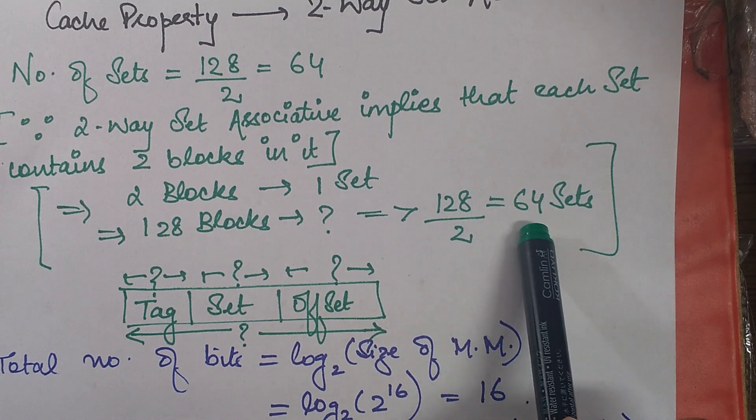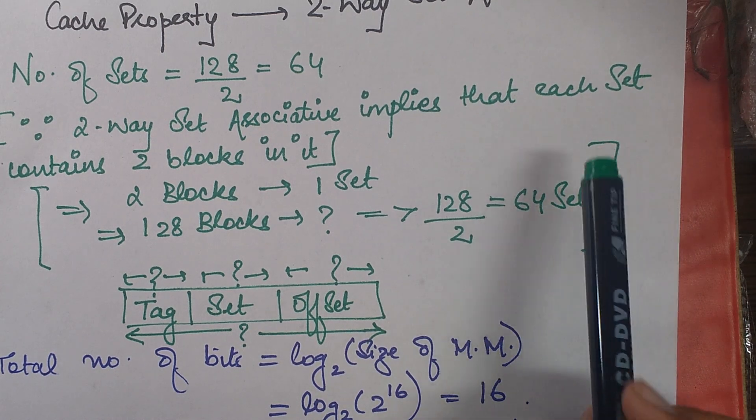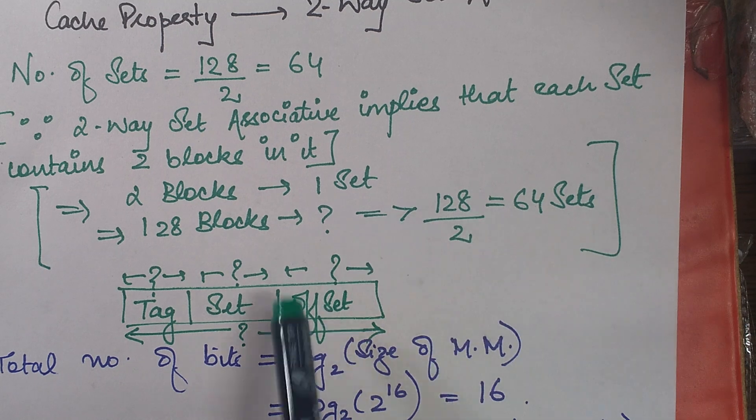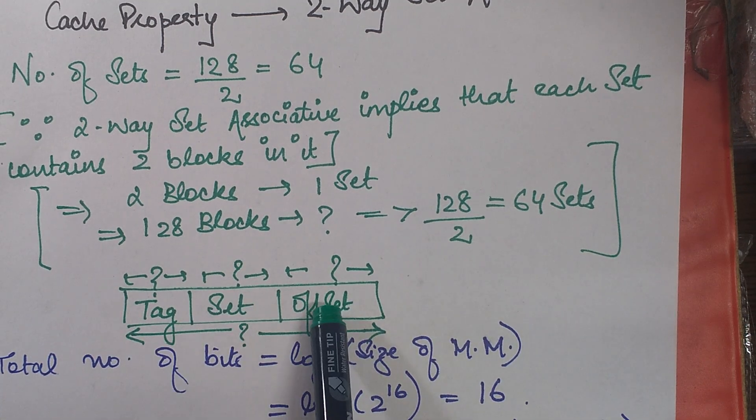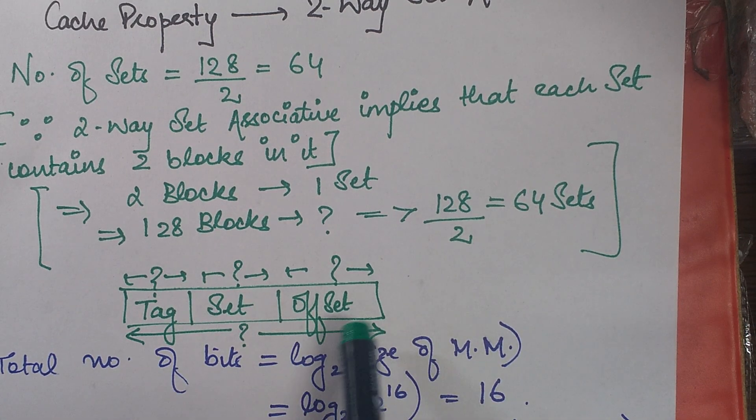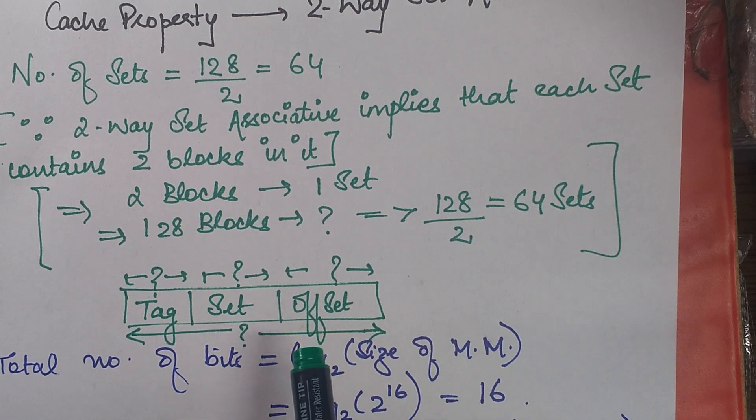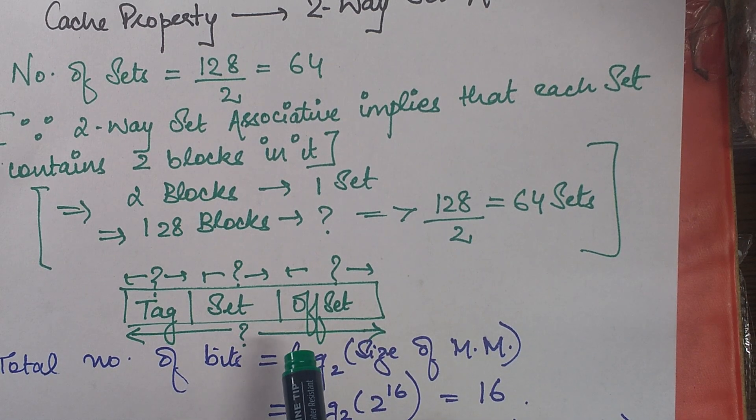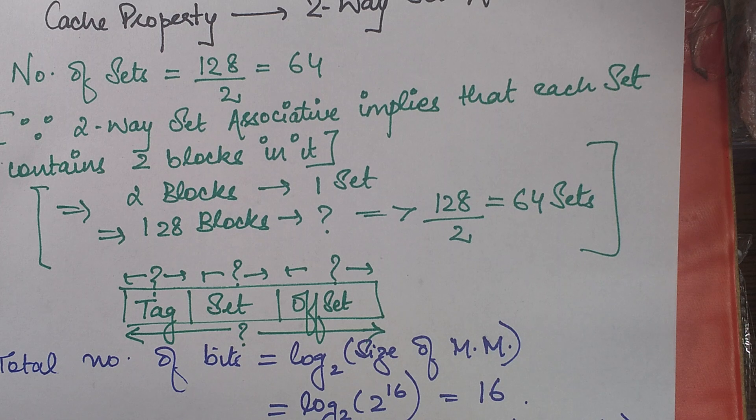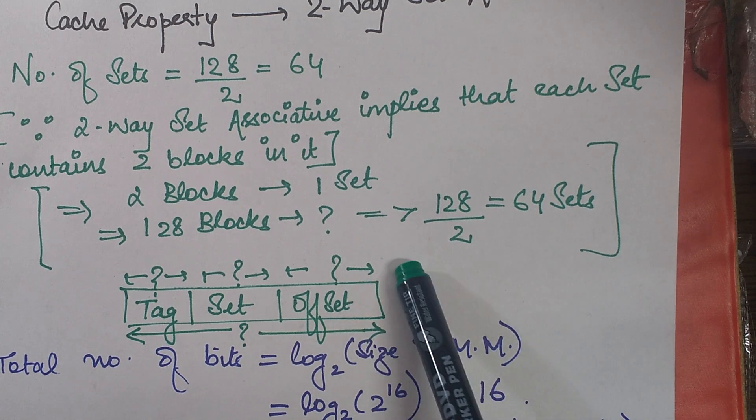Now if I change this into powers of 2, now why would I change it into powers of 2? To get my this number of bits and what we say this, we call it as the set associative mapping representation. So since we actually have to find the various number of tags, set and offset bits in various questions.